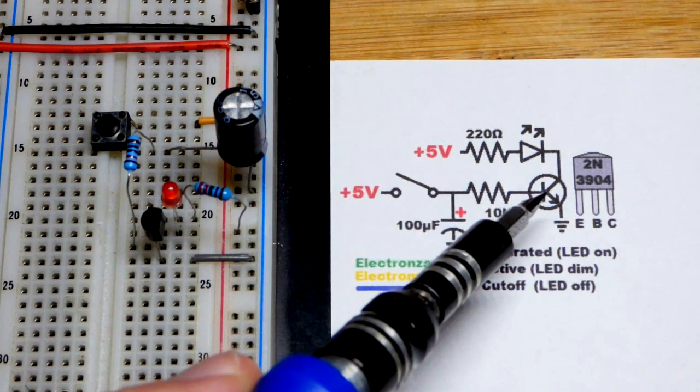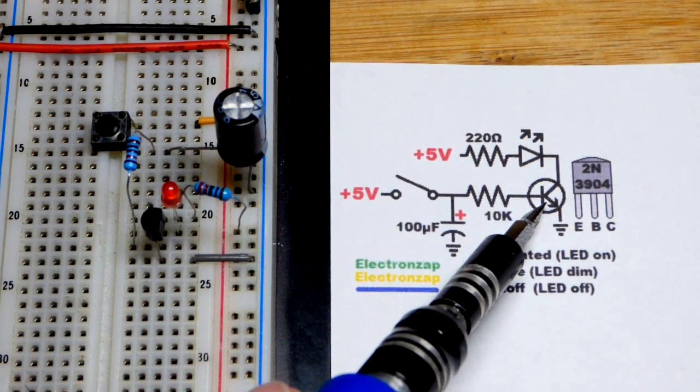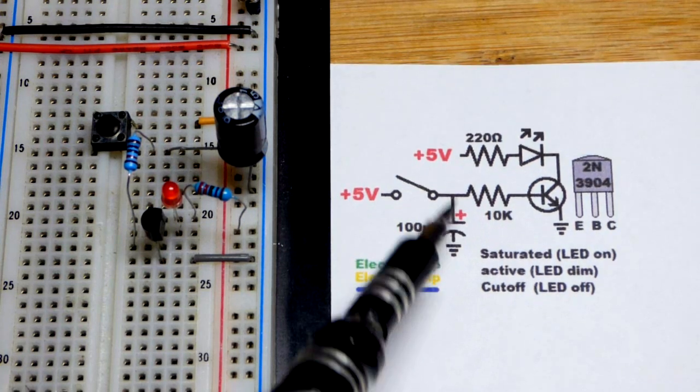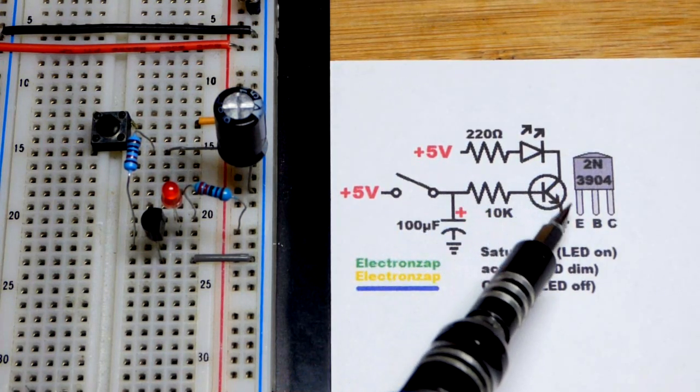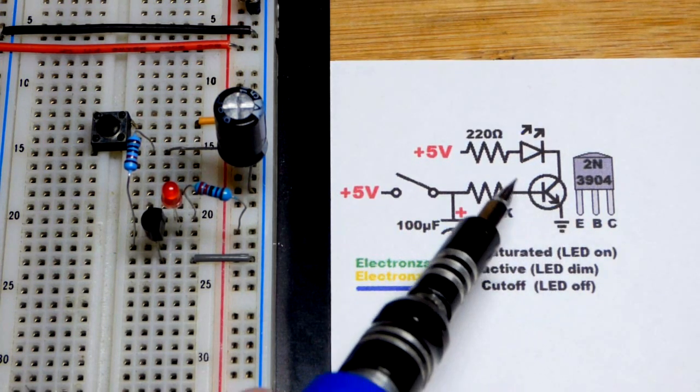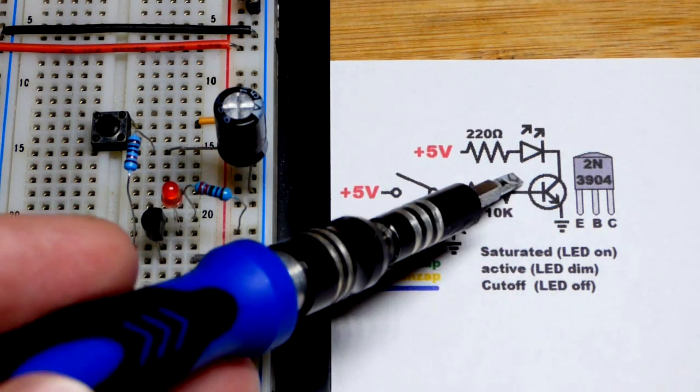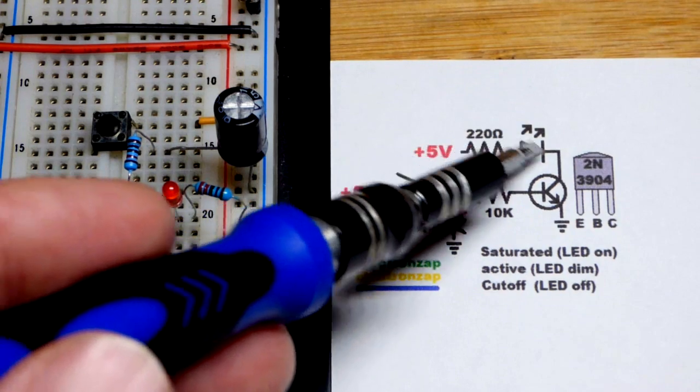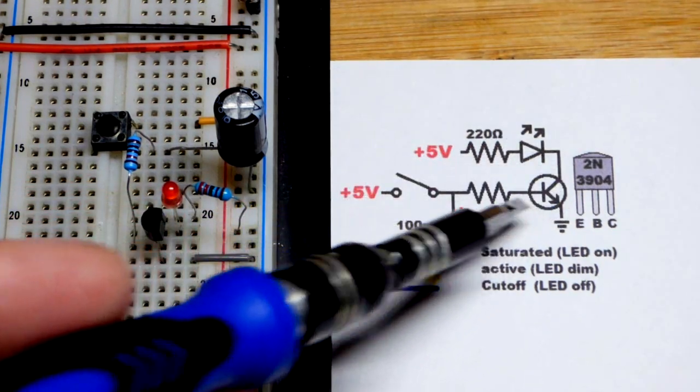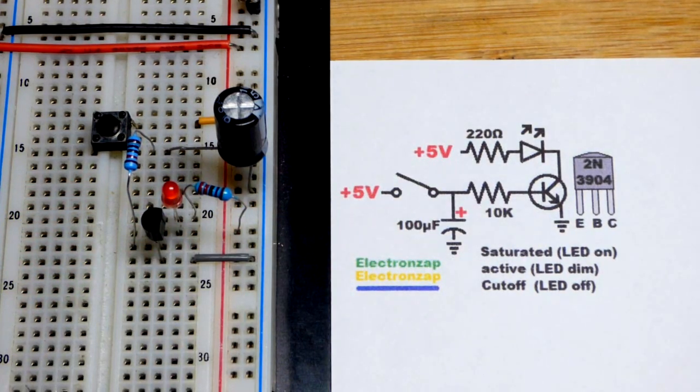Now we're going to extend that time by using an NPN bipolar junction transistor. The capacitor just needs to keep the transistor on with a very small amount of current. The LED will be fully on and then fade off as the transistor slowly gets less conductive.